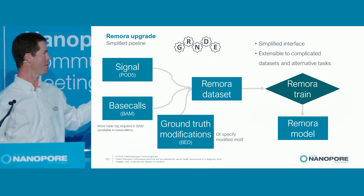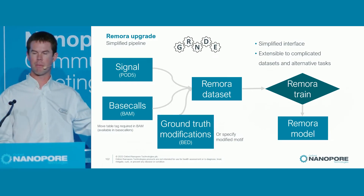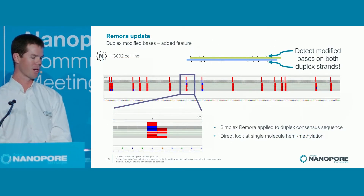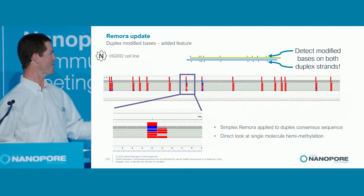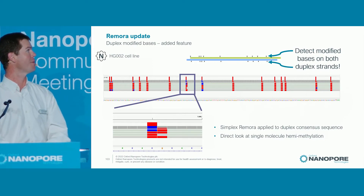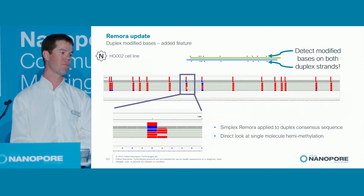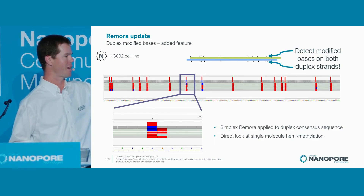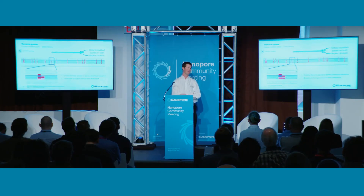Training a model starts from the POD5 signal and the base calls. You need to know where your modified bases are, either pass a ground truth or put a dataset together, and you're done — you train the model. One really exciting new feature is that you can now run Remora to detect modified bases on both strands simultaneously. The modified base format handles that, and you can see reads with canonical and modified bases right next to each other in the same duplex strand. It's really powerful work — excited to see the biology people come up with using this.